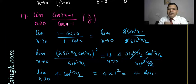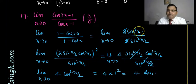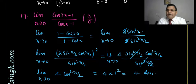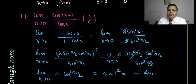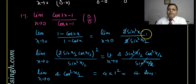Alternatively, you can rearrange using [sin(x)/x]² divided by [sin(x/2)/(x/2)]² and apply sin(θ)/θ = 1 as θ → 0. Either approach gives the same answer of 4.